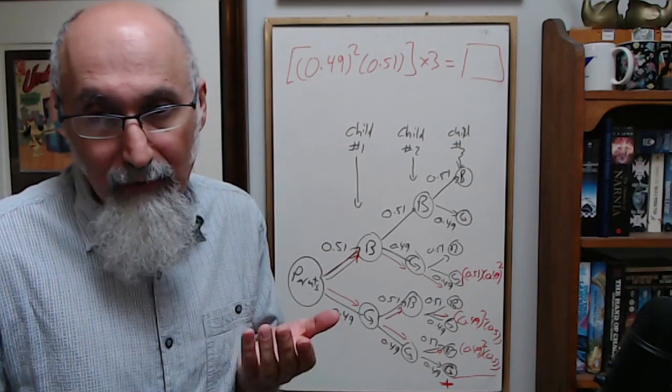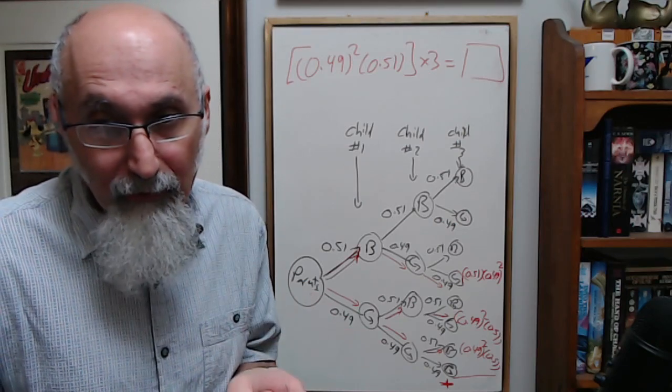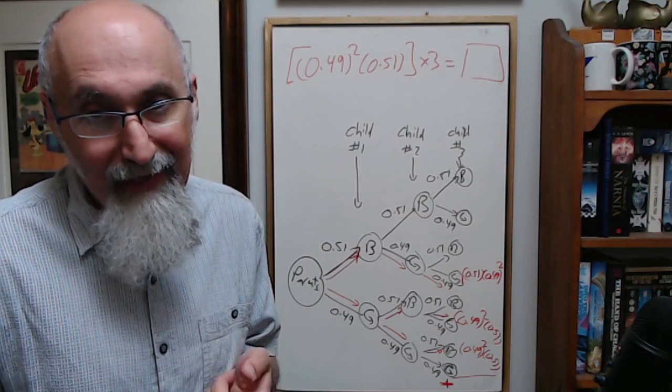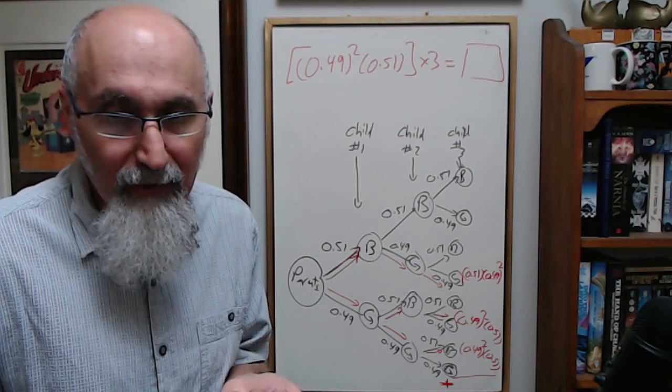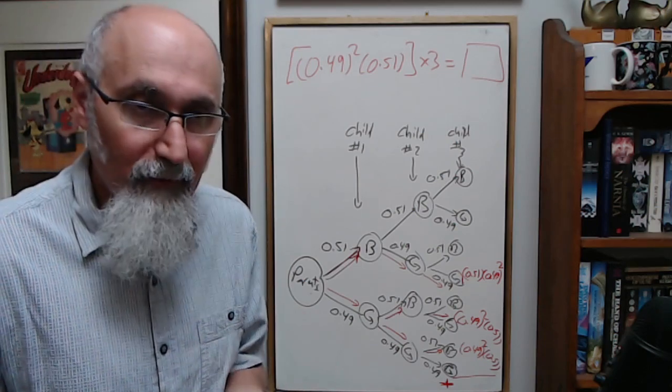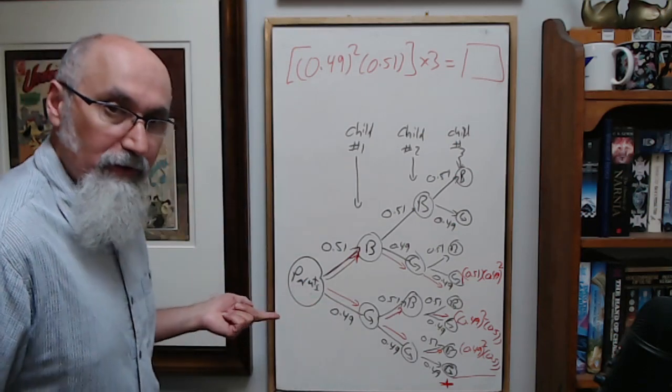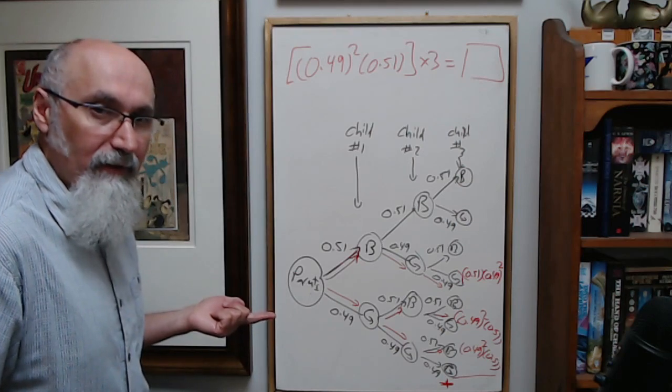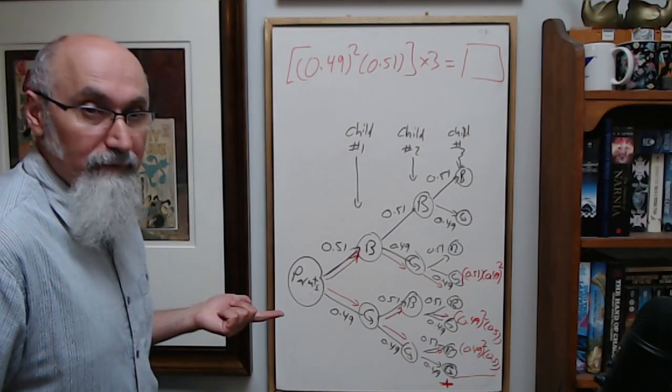And the problem is: the chance of having a girl baby is 49% and that of a boy baby is 51%. What's the chance that a family of three children is made up of two girls and one boy? The tree diagram works for this. Is that clear?